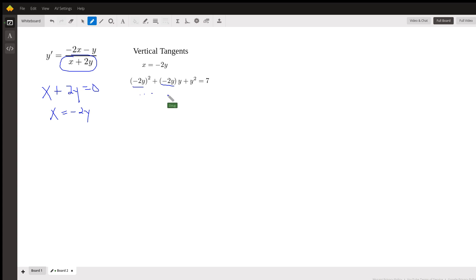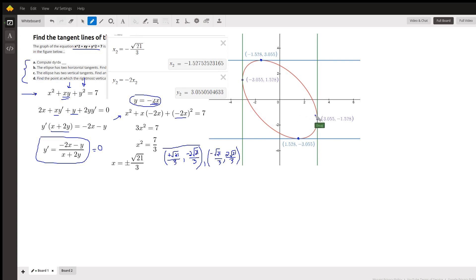Turns out it's very similar. You get 3y squared equals 7, so y equals plus or minus the square root of 21 over 3. Multiply those values by negative 2 to get the corresponding x coordinate, and that's what yields these points right here. Okay, there you go. Hope that helped. If you have any questions on that, post a comment.